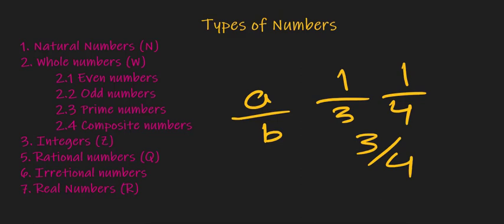Another type is irrational numbers. Any number that cannot be expressed by an integer or the ratio of two integers is an irrational number. Irrational numbers are expressible only as decimal fractions where the digits continue forever with no repeating pattern.